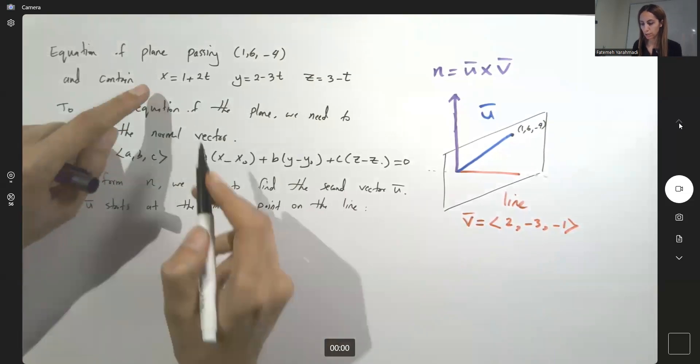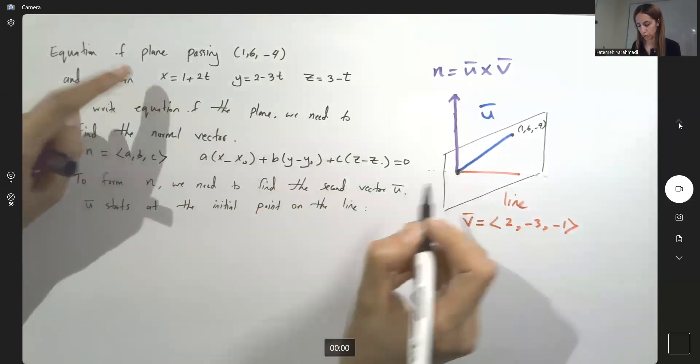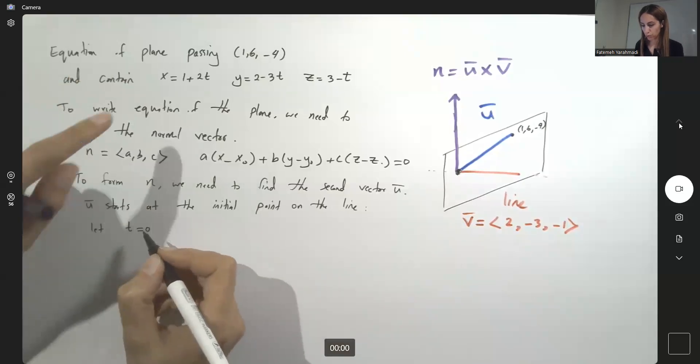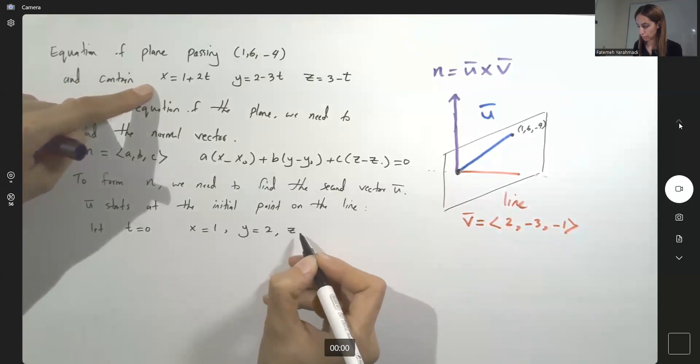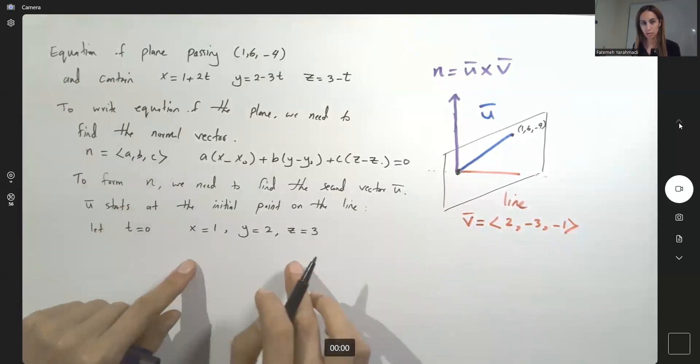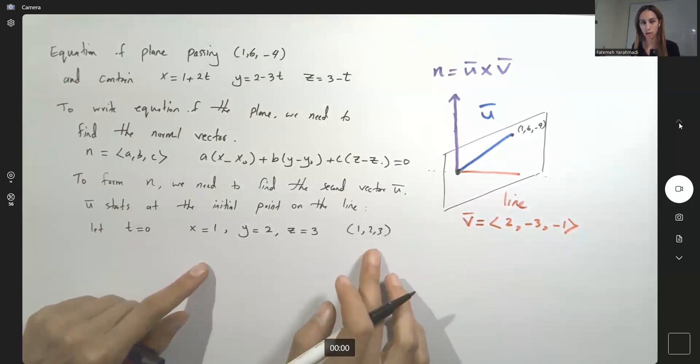So what is the initial point on the line? This is the initial point. Let t be equal to 0, x becomes 1, y becomes 2, and z becomes 3. So this is the initial point, 1, 2, 3 on the line.